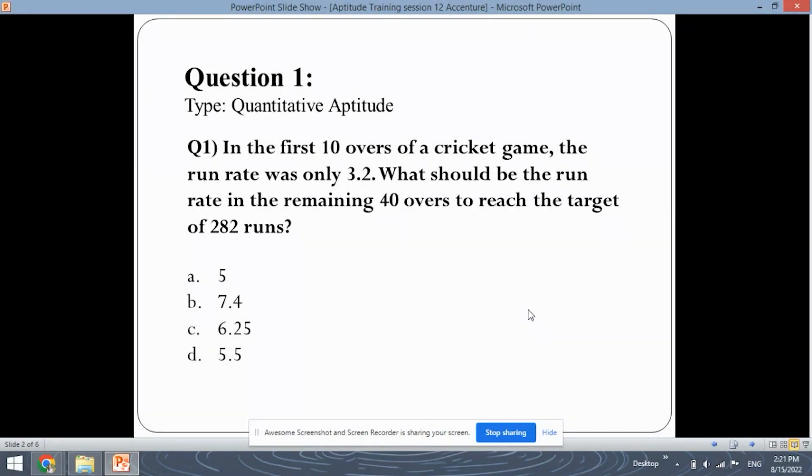As always, we are going to begin with the first question, which is of quantitative aptitude and it is covered under the topic of averages. So first let's read out the question. The question is, in the first 10 overs of a cricket game, the run rate was only 3.2. What should be the run rate in the remaining 40 overs to reach the target of 282 runs?